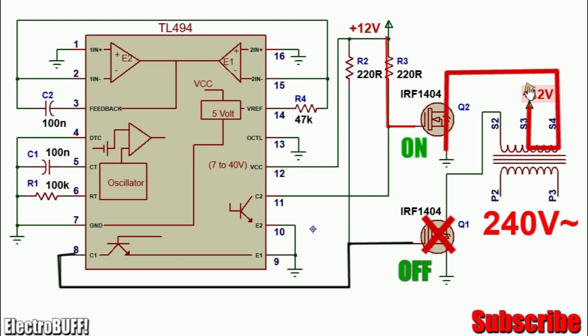This now allows current to flow from the 12 volts supply through the winding S3 S4 through the MOSFET Q2 into ground as shown.